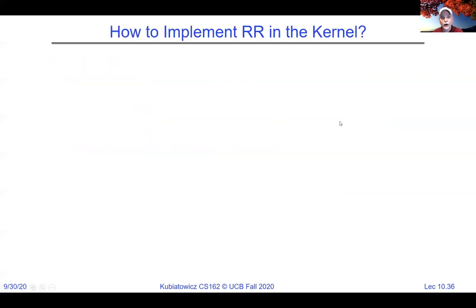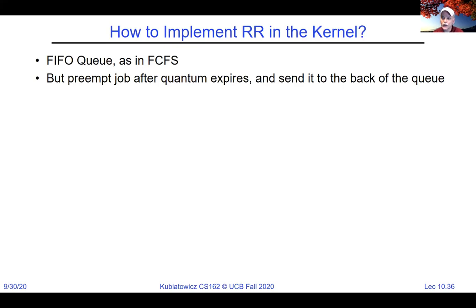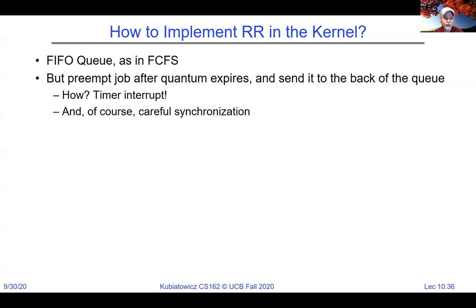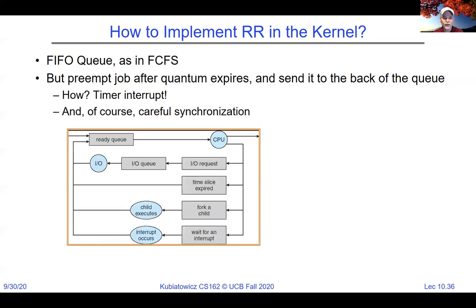To implement round robin in the kernel: start with a FIFO queue just like FIFO scheduling, but add a timer. The timer fires at regular intervals set by the quantum — usually 10 or 100 milliseconds as a kernel configuration parameter. On timer interrupt, take the current thread off the CPU and pull the next one off the ready queue. You must synchronize carefully so queues don't get corrupted. This is directly relevant to project two, where you'll implement some scheduling.